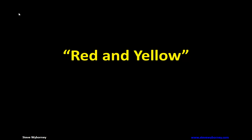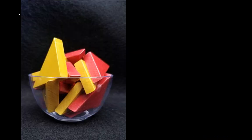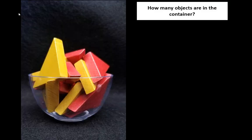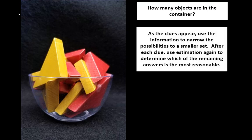Today's Estimistry is called Red and Yellow. How many objects are in the container? I will be giving you four clues today. You will use each clue to figure out if your estimate makes sense.